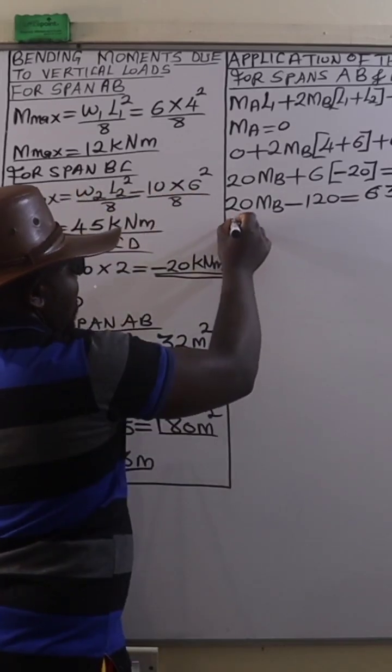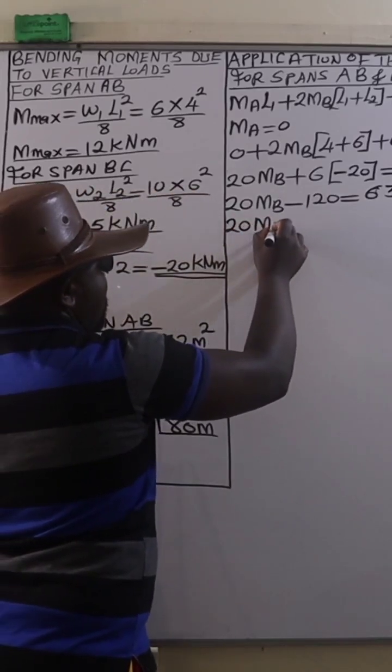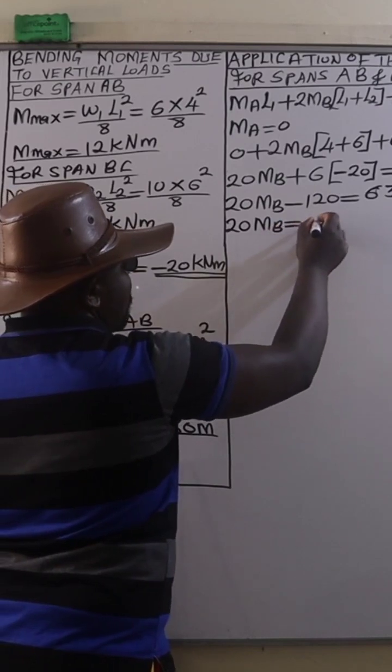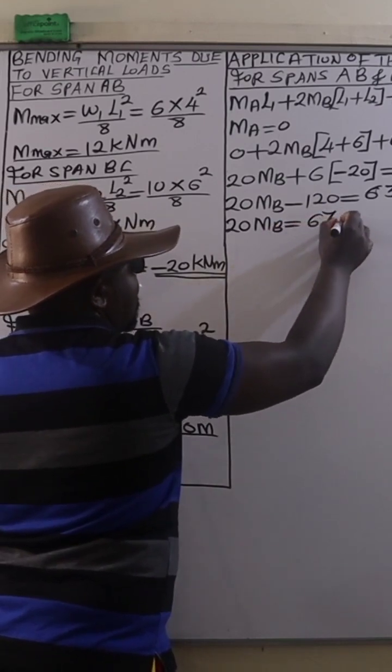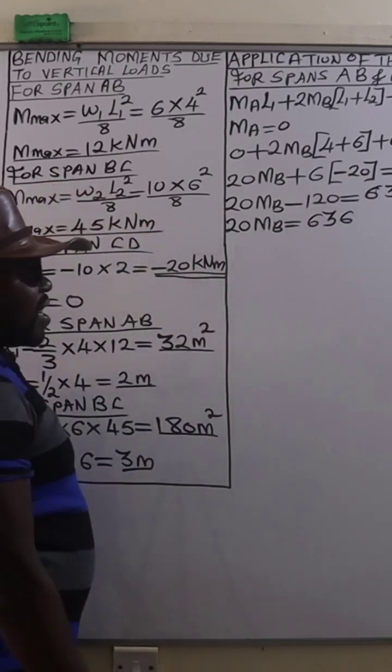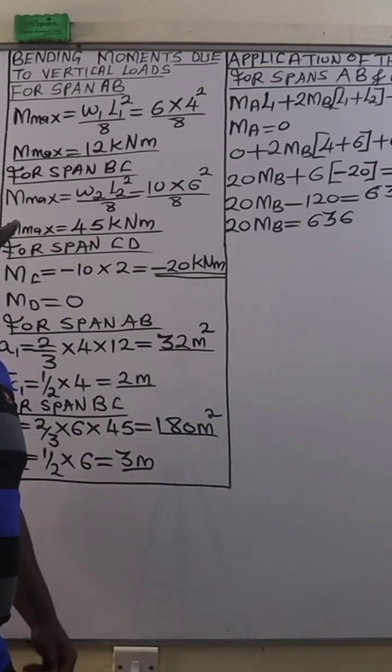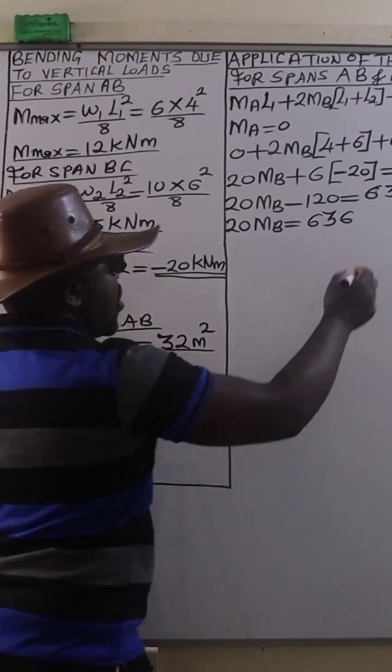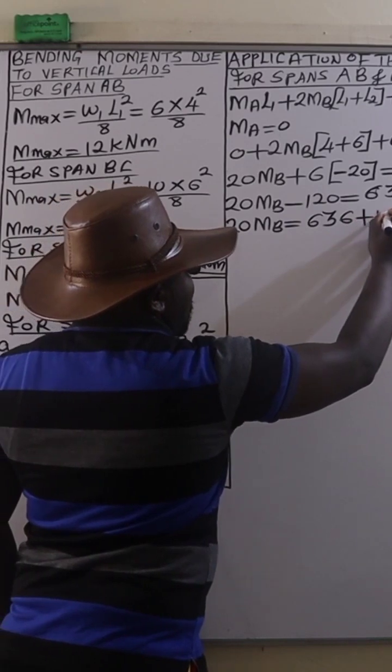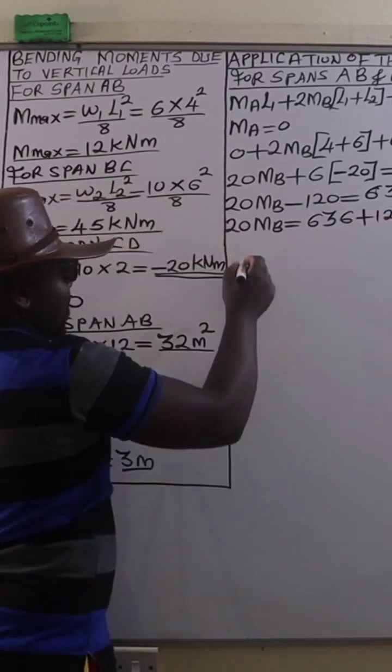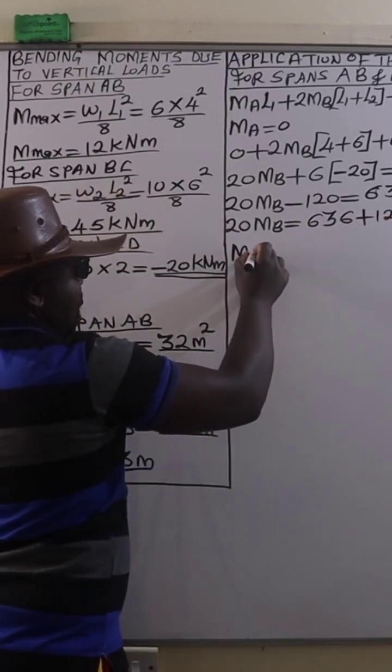Then 20MB will be equal to 636. We take negative 120 to the other side of the equation, that is going to be plus 120, and that is going to give us MB